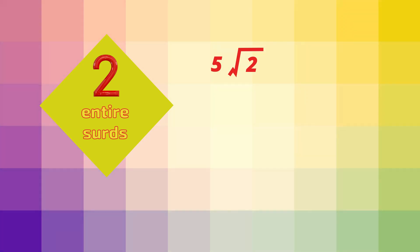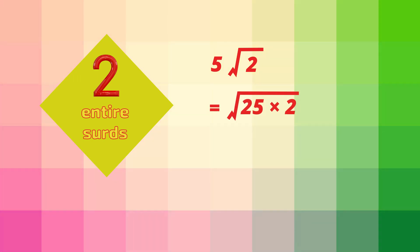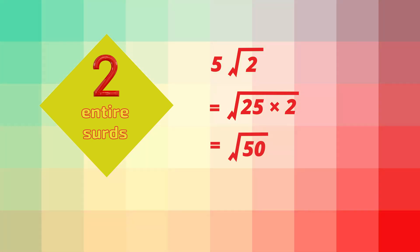What is 5 root 2 as an entire surd? First we square the 5 at the front: 5 squared is 25 and goes inside the square root symbol. Then we multiply what's inside the square root symbol: that's 25 times 2, which is 50. So 5 root 2 written as an entire surd is root 50.